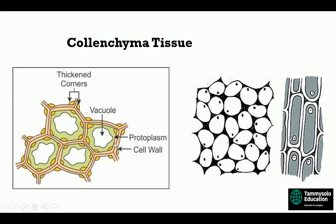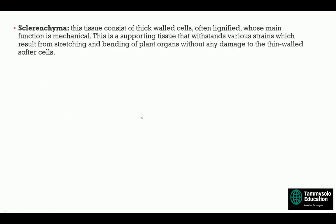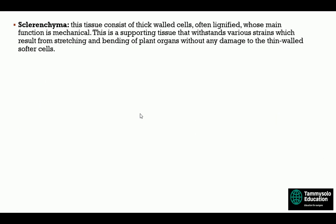Sclerenchyma consists of thick-walled, often lignified cells whose main function is mechanical. It is a supporting tissue that withstands various strains resulting from stretching and bending of plant organs without damage to the thinner-walled, softer cells. The sclerenchyma tissue is the reason certain plants can bend when wind comes and return to their original position — it helps plants withstand mechanical stress applied by wind impact. Without sclerenchyma, those plants would break under any minor stretch.